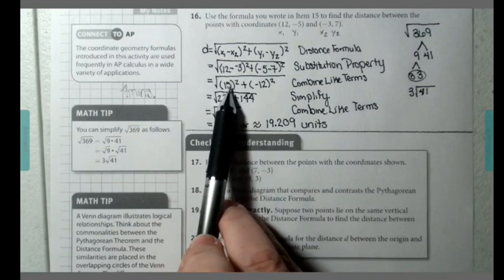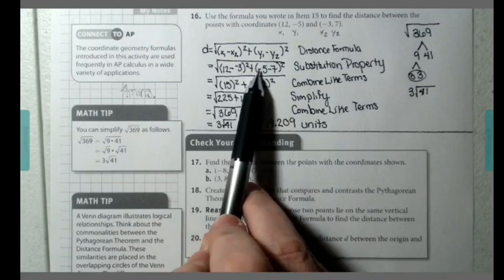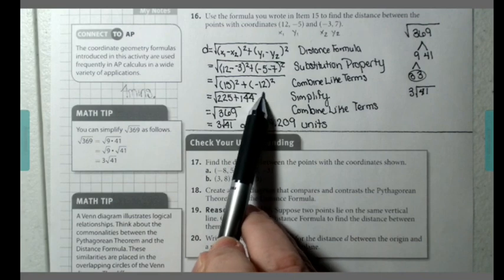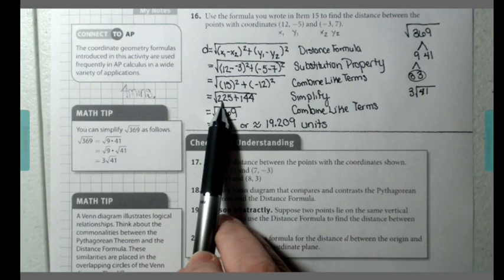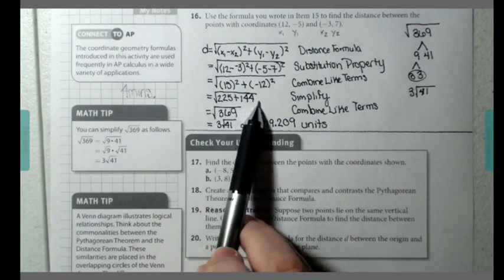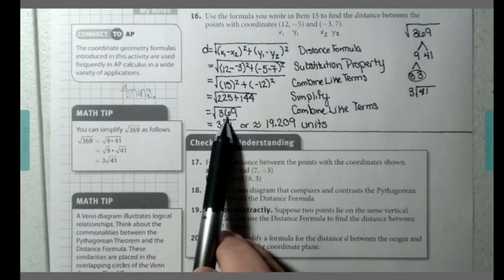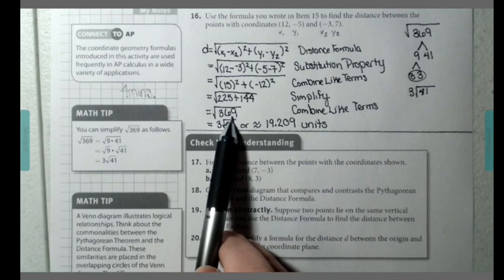12 minus negative 3 is positive 15. Negative 5 minus 7 is negative 12. I then simplified by doing the squares. So I got 225 and 144. When I combined like terms, I got 369.